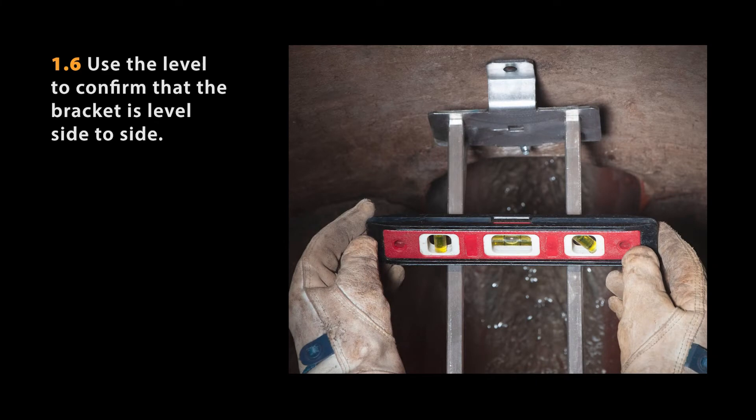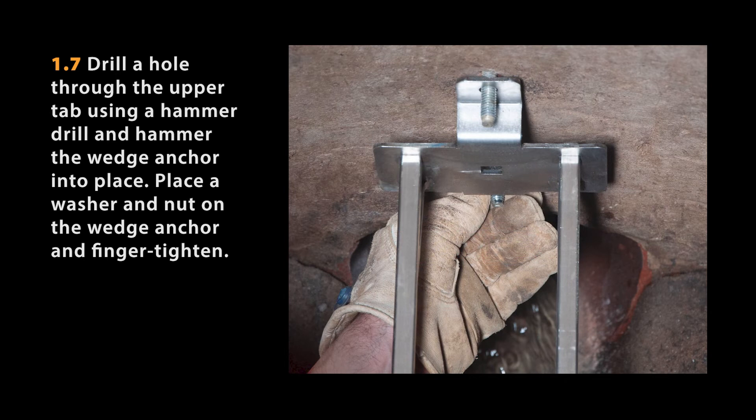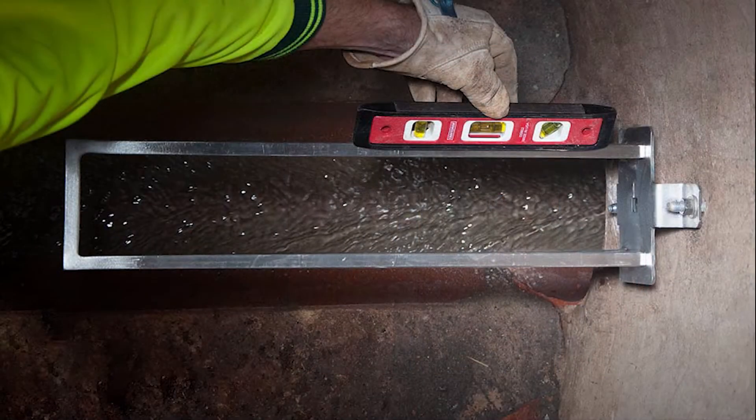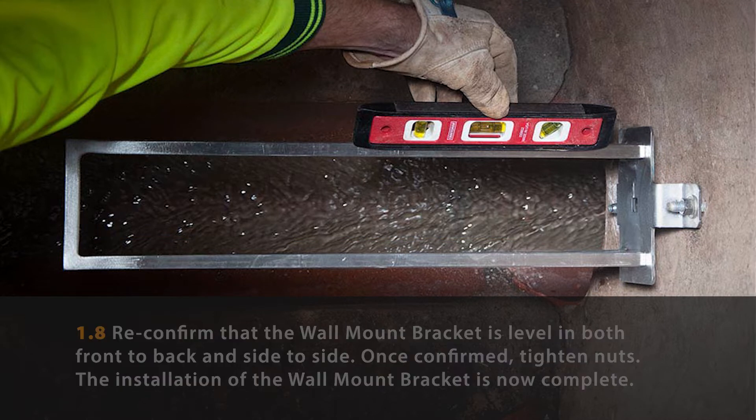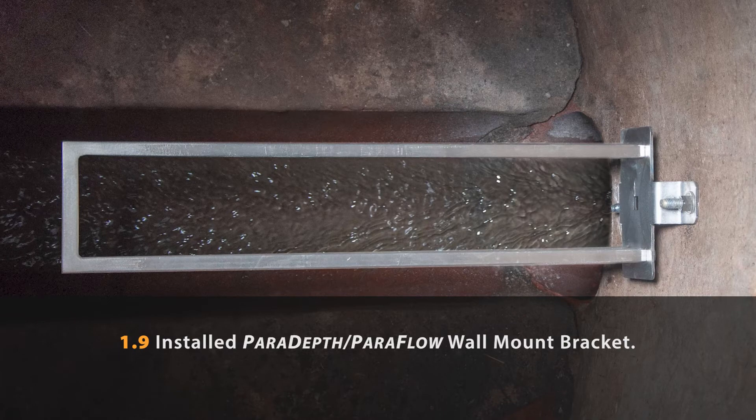Use the level to confirm that the bracket is level side to side. Drill a hole through the upper tab using the hammer drill and hammer wedge anchor into place. Place a washer and nut on the wedge anchor and finger tighten. Re-confirm that the wall mount bracket is level both side to side and front to back using the level. Once confirmed, tighten the nuts. The installation of the wall mount bracket is now complete.